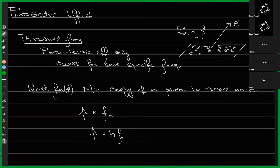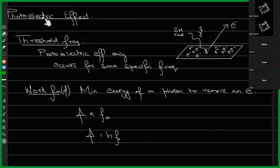Last time we were discussing the photoelectric effect. We talked about threshold frequency — a particular frequency required for the photoelectric effect to happen, associated with electromagnetic radiation thrown at a metallic surface. We also talked about the work function of that metallic surface. So there are two things that make up the system: the electromagnetic wave and the metal it is going to hit.